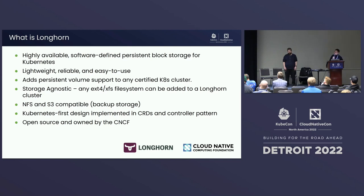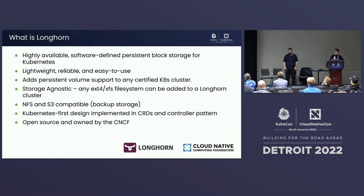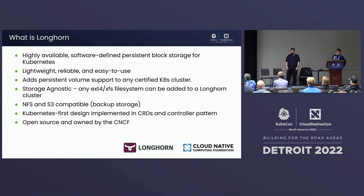The major thing is persistent volumes. Longhorn provides different types of volume mode and access mode, like block device and file system. For access mode, we have ReadWriteOnce and ReadWriteMany. Some of you using Longhorn may be curious about when ReadWriteMany will be generally available - it will be soon, by end of this year in the 1.4 release. For storage agnostic support, we don't make users worry about the host file system. Any kind of host file system can be used by Longhorn; right now, verified by our team are EXT4 and XFS.